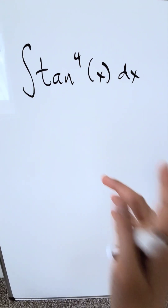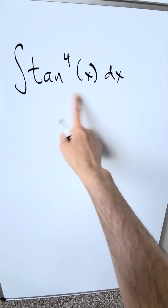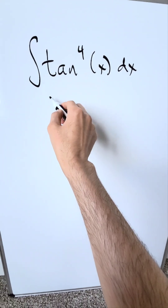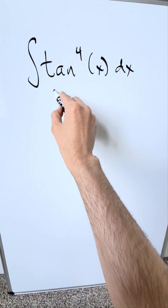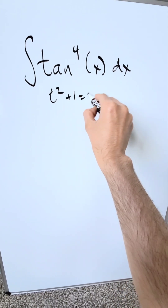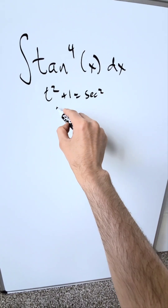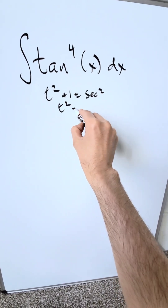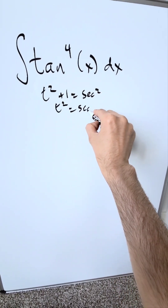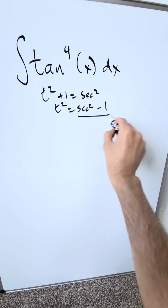Let's give this a try. A tan to the power of 4x integral — how can we do it? Think about this identity: tan²(x) + 1 = sec²(x). Then we can say tan²(x) is equal to sec²(x) minus 1.